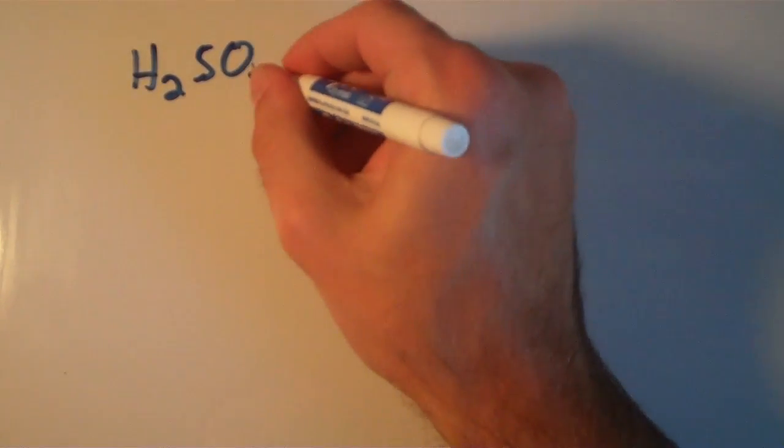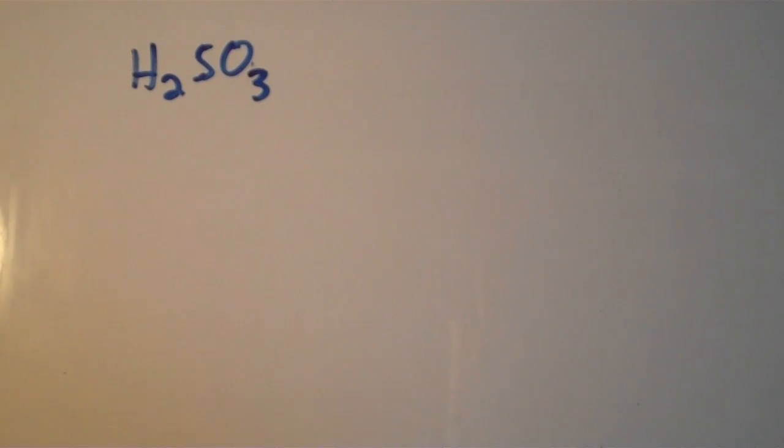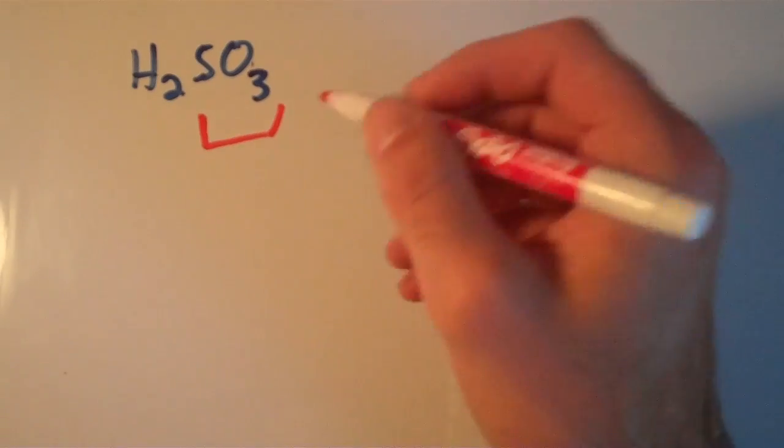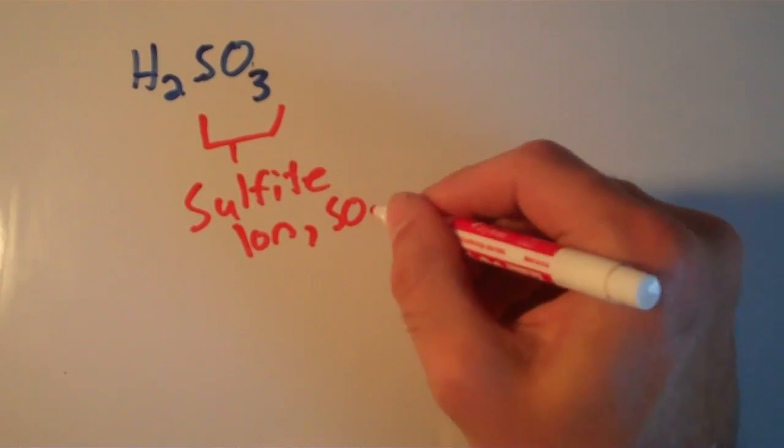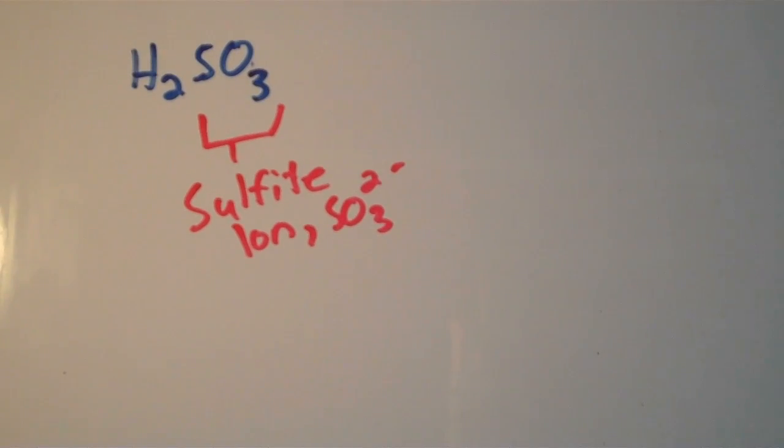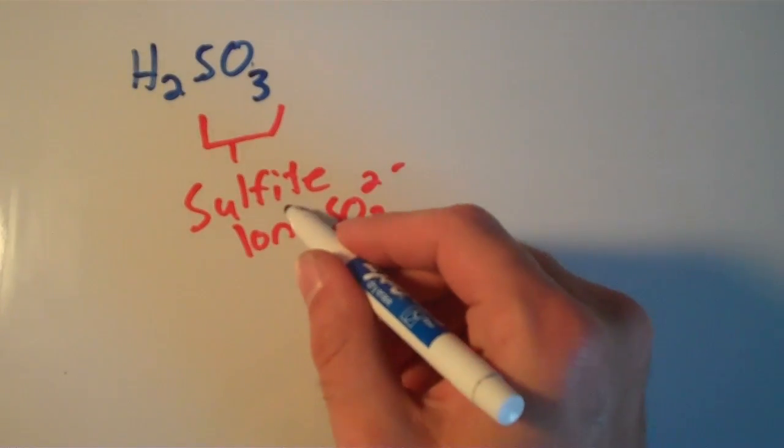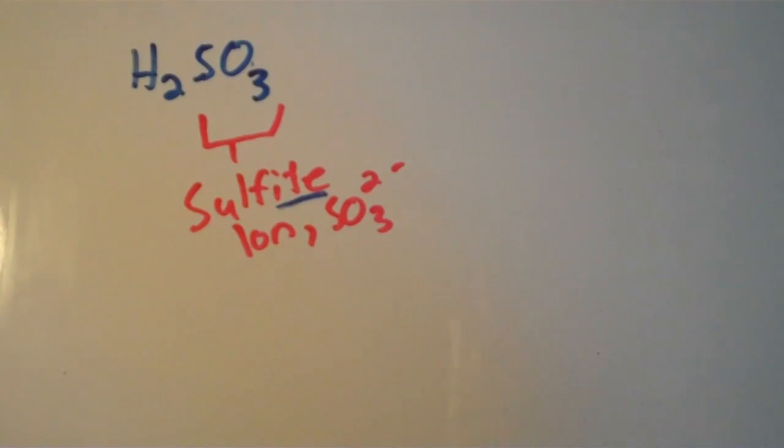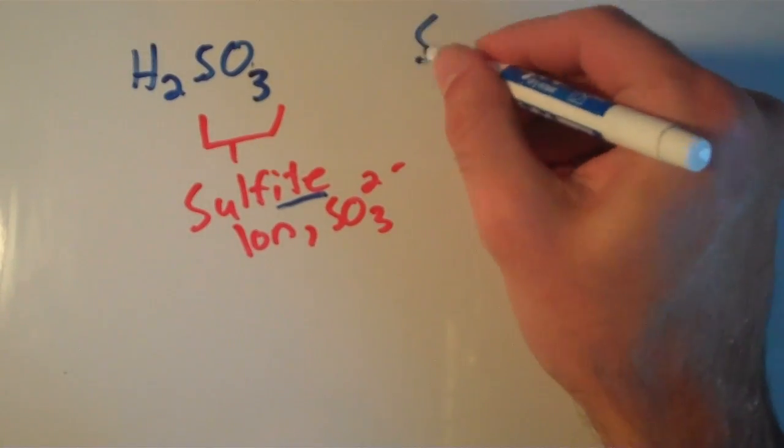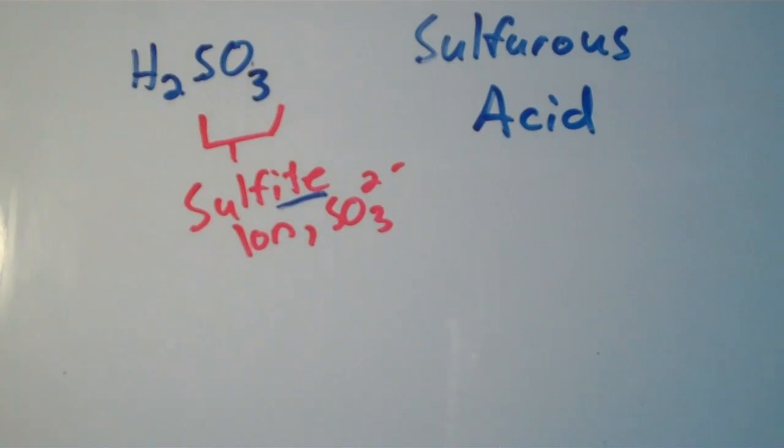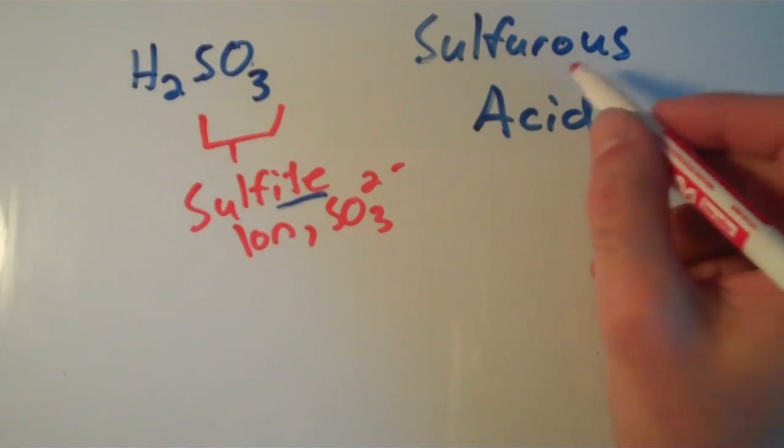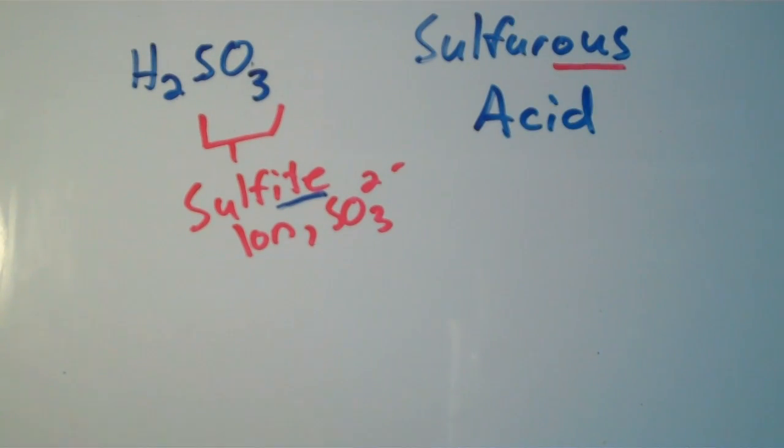How about H2SO3? So now our anion is different. It's no longer the sulfate ion. It is now the sulfite ion, which is SO3 2-. So now our anion ends with -ite. And if our anion ends with -ite, then we would call this sulfurous acid. So -ite goes with -ous. That's basically how to name oxyacids.